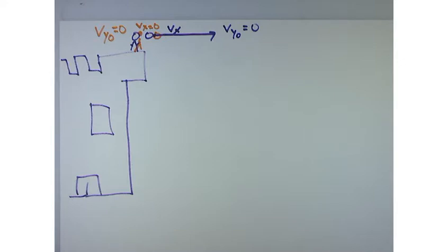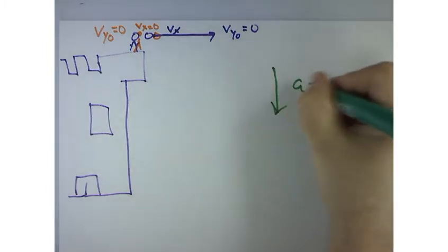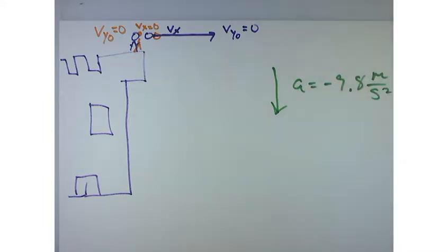Now, what acts on both the ball and the stone? Gravity. So both of them will have a constant acceleration in the negative direction of negative 9.8 meters per second squared. So think in just terms of the Y direction.